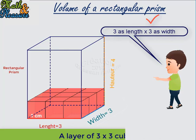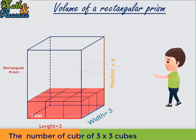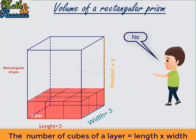Exactly, length times width. Let's call this red part a layer. So each layer contains three times three centimeter cubes. The number of centimeter cubes in each layer is equal to length times width. But does it fill the prism? Good, how many layers will you need to fill it?